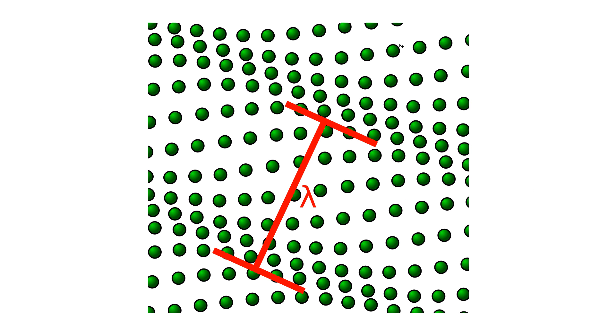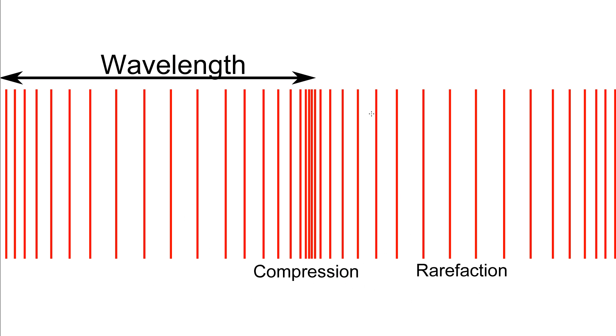A longitudinal wave is when we have the direction of motion the same direction as the direction of travel. So here we've got a sketch of a longitudinal wave such as sound waves, and we might imagine this wave is travelling to the right and we have these compressions and rarefactions.